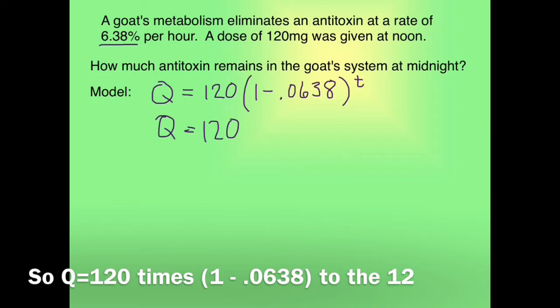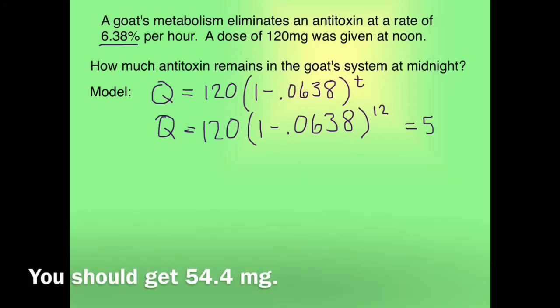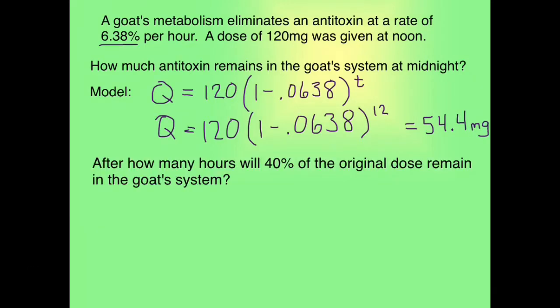So Q equals 120 times 1 minus 0.0638 to the 12, and when you put that in your calculator, you should get 54.4 mg.